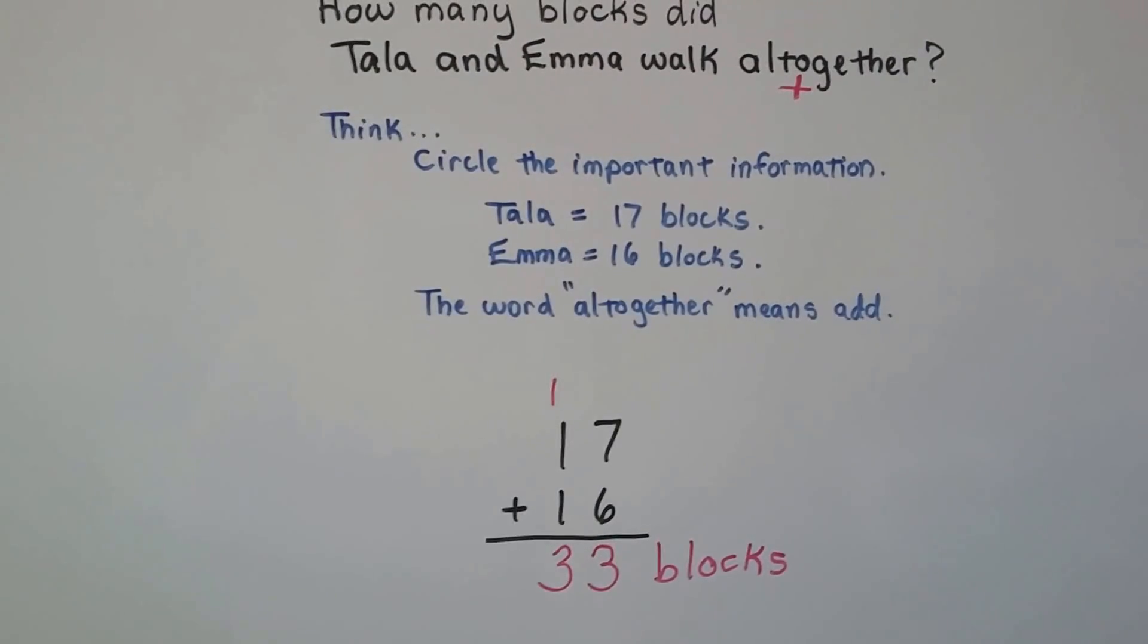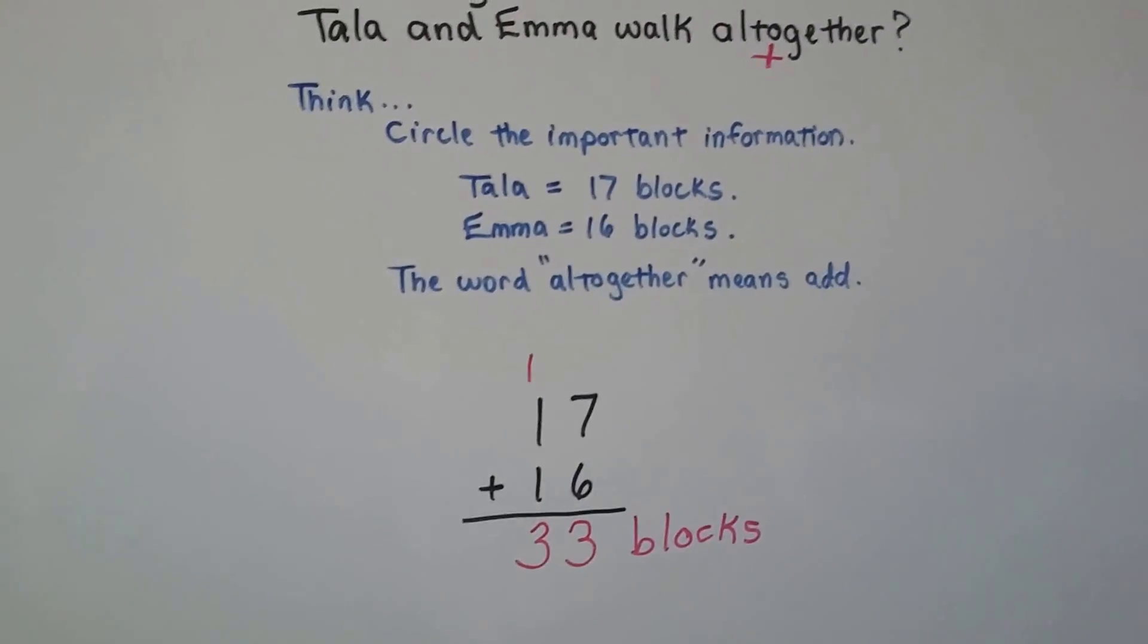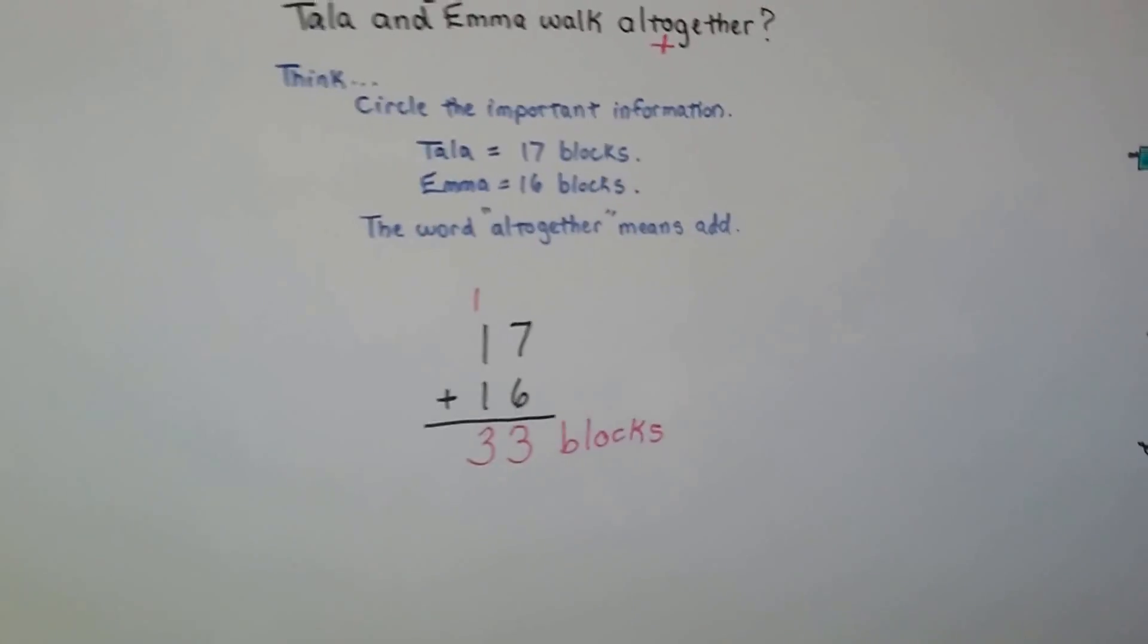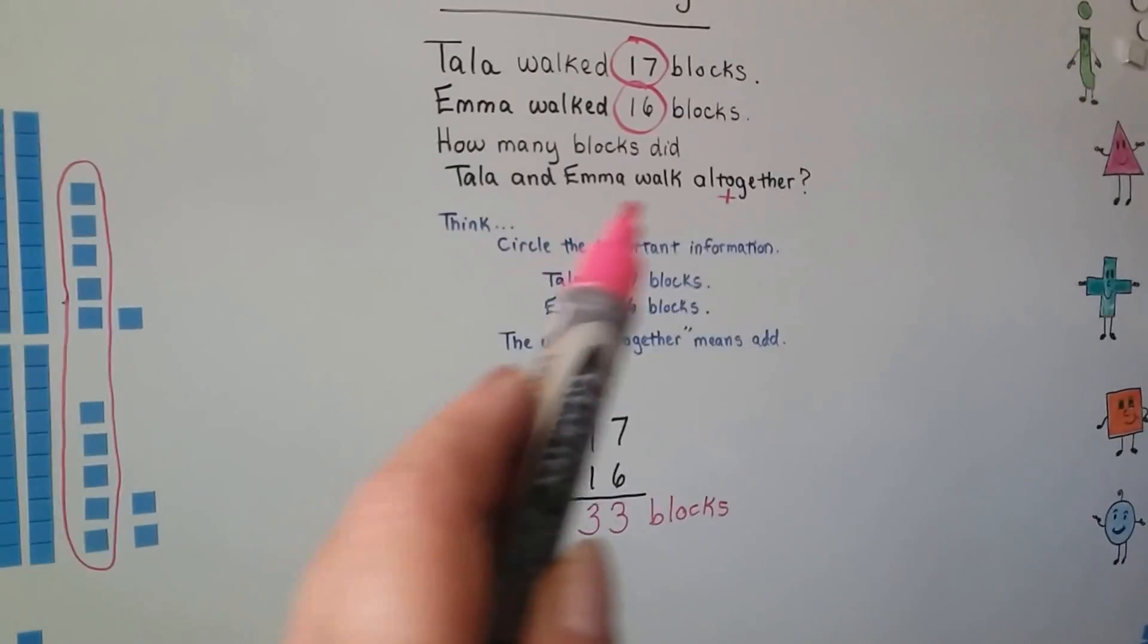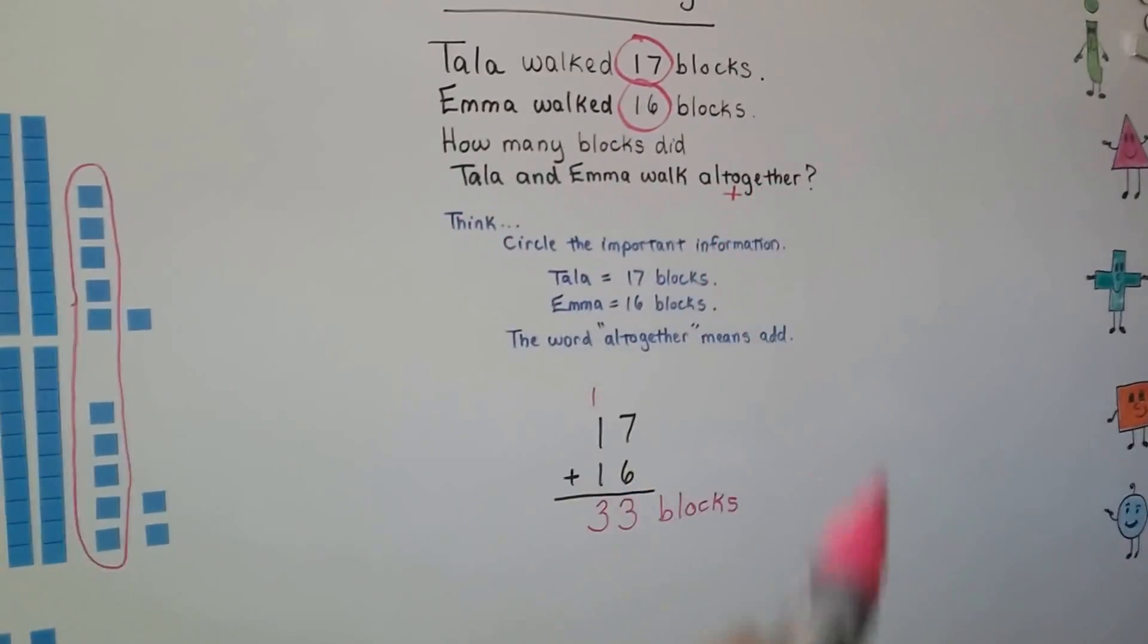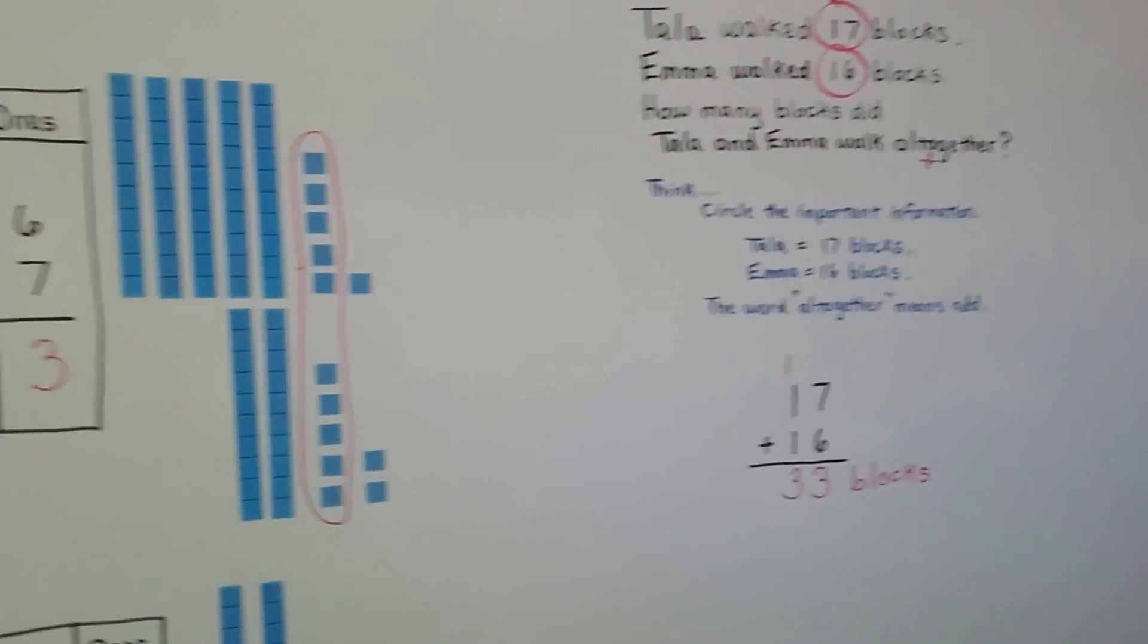Did we answer what it was asking? Yeah, we did. So we know they walked 33 blocks. Remember to circle the important information. Remember to look for the clue words that tell you if it's an addition or subtraction sentence. And remember to label your answer when you do a word problem.